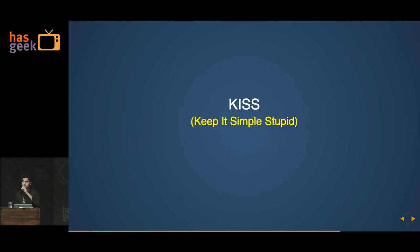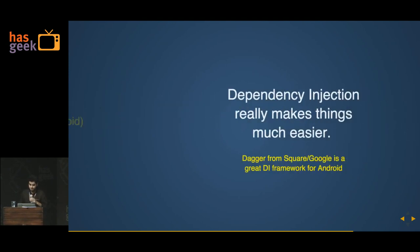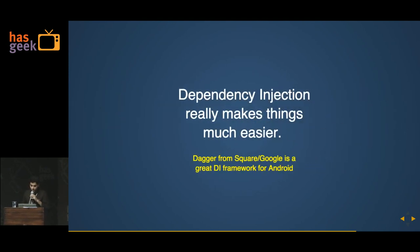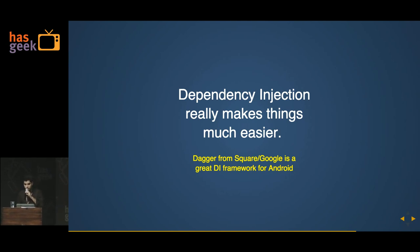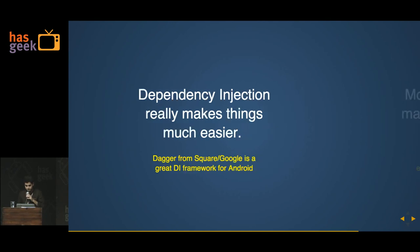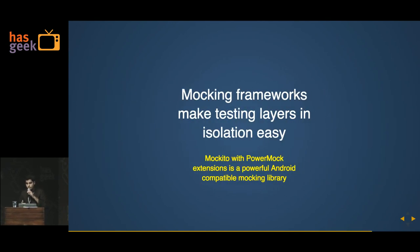Keep it simple — too much architecture is bad. Dependency injection makes things easier. We saw a talk about Dagger 2, that's a good one, or you can just roll your own little DI framework on the fly. We use mocking frameworks to test — things like Mockito and Power Mockito and there's other Mockitos.